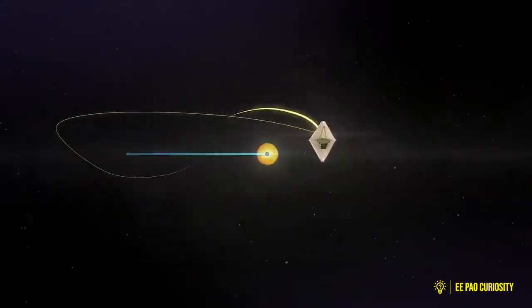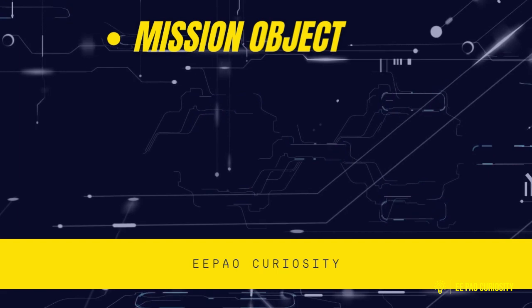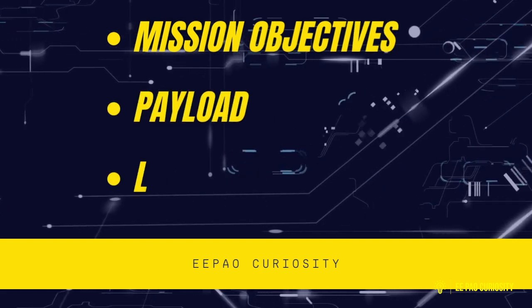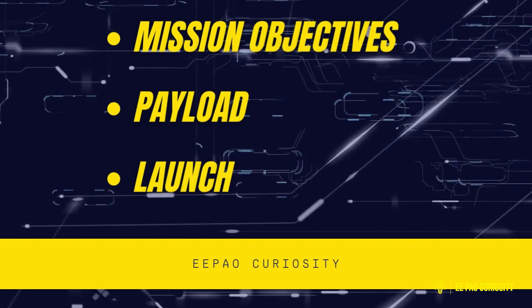Therefore, Aditya will be put in a halo orbit, which is a periodic three-dimensional orbit at the point L1. Now, coming back to the mission, let us find out what the mission objectives are, its payload, and when ISRO is planning to launch.